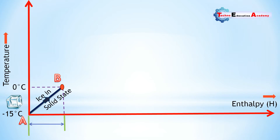Heat supplied during this process is called sensible heat. Sensible heat means during heat supply only temperature increases or decreases but there is no change of phase. Thus the heat supplied from A to B is called sensible heat of ice, and up to point B the ice will remain in the solid state.